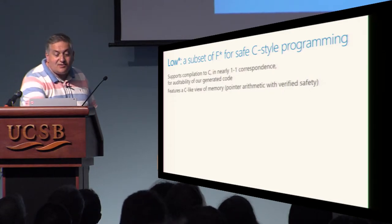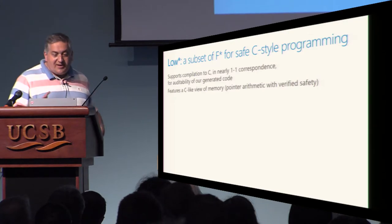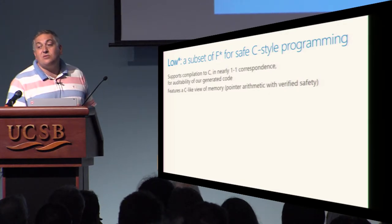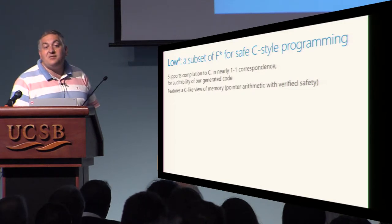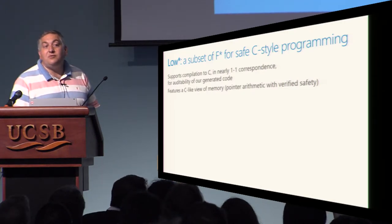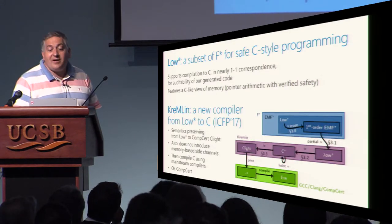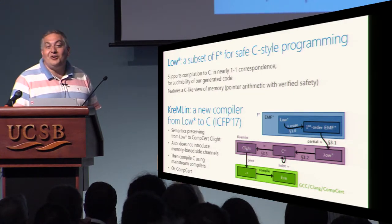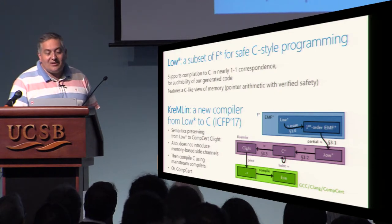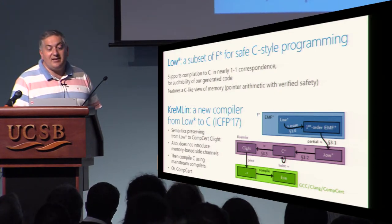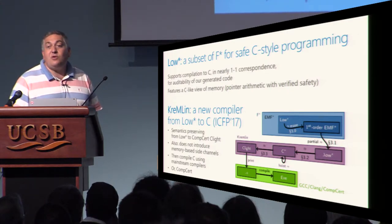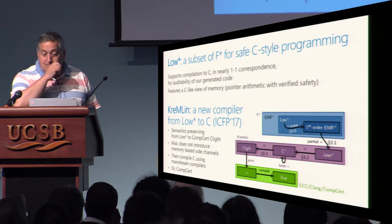We are in F* and we want full control over the generated code. We designed a subset of F* that is intuitively the intersection of F* and C — called Low* — so that we can program at a low level and link with assembly code if needed, while still benefiting from the full verification framework. We build a compiler so that once we have written and verified something in F*, we can compile it down to C. We prove that we compile to the semantics of C as used by CompCert, the certified compiler built by INRIA.